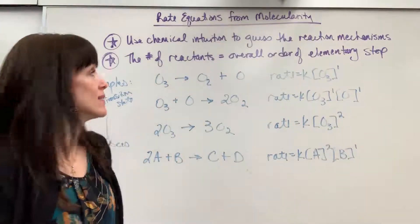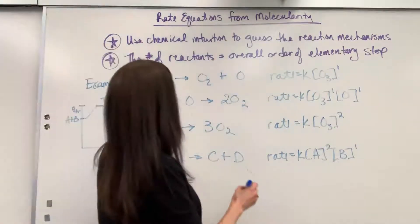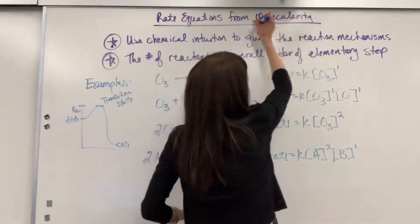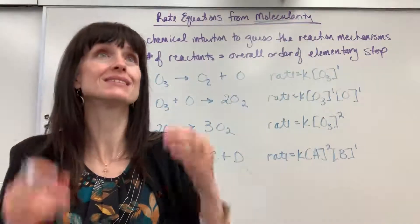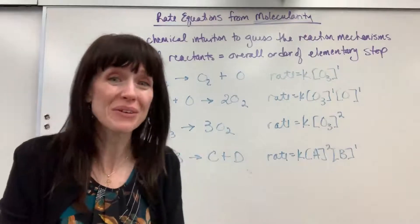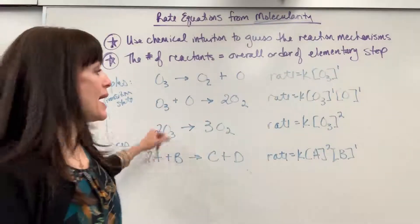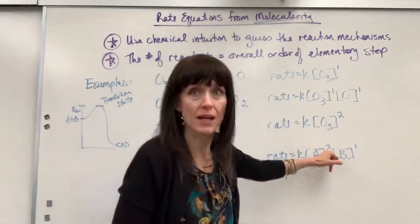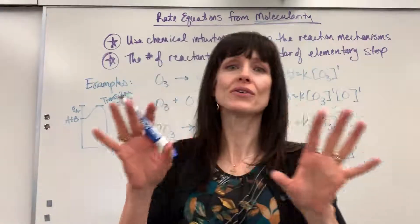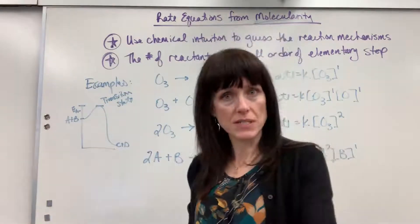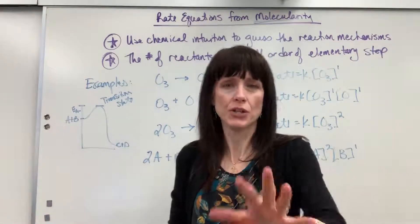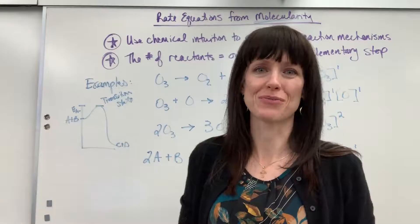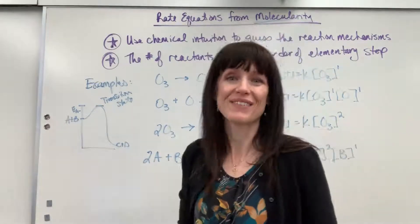So pretty straightforward. What you have to remember is this is all about molecularity. When you are dealing with elementary steps, molecularity, this is the only time, only, only, only time that you can take coefficients and make those the orders. And again, it's because it's all theoretical anyway. If you're given data, you have to do the math to find the orders M and N. And you can watch the videos on determining the rate equation. Okay, good work. Thanks.